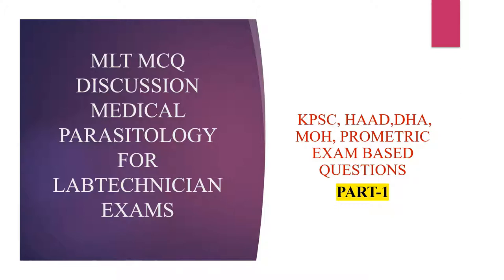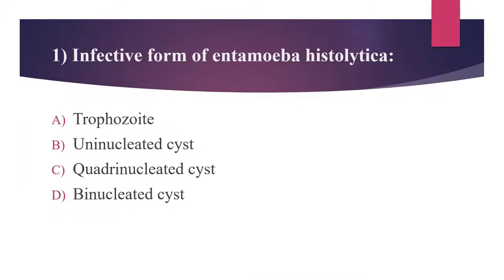First question: What is the infective form of Entamoeba histolytica? Option A: Trophozoite. Option B: Uninucleated cyst. Option C: Quadrinucleated cyst. Option D: Binucleated cyst.